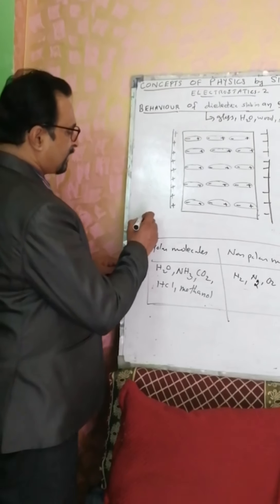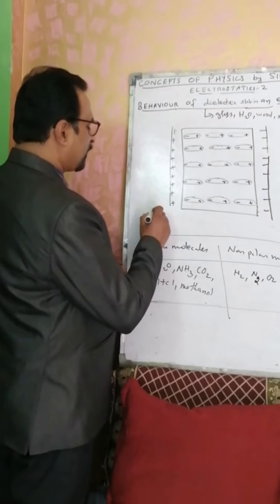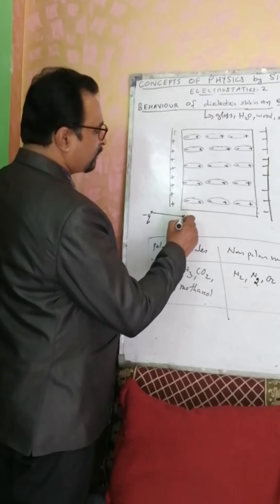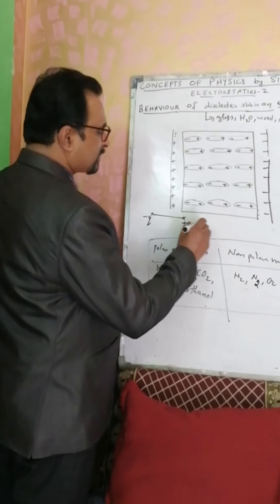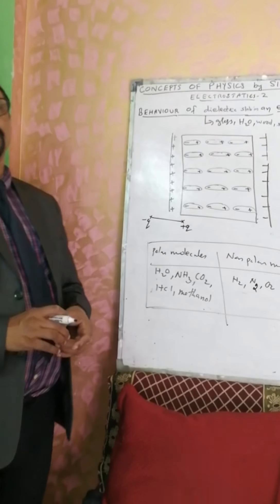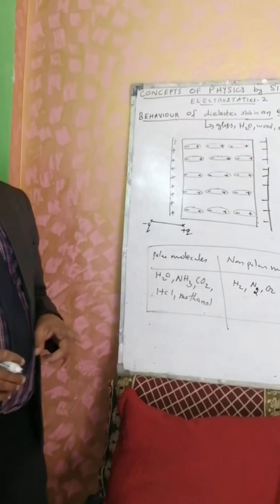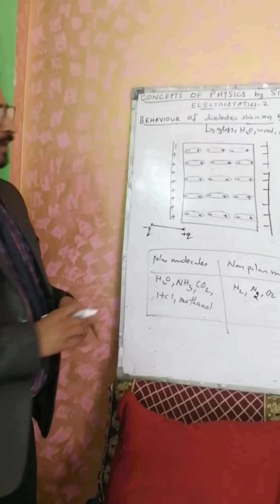You are familiar with the term electric dipole. What is the meaning of electric dipole? Minus Q and plus Q located at two different points will constitute an electric dipole.